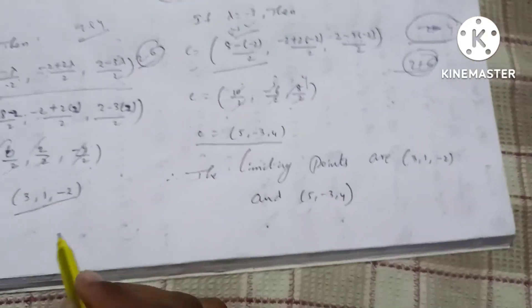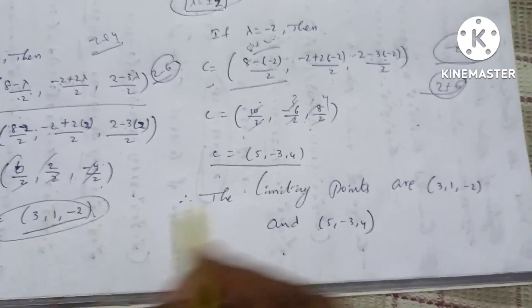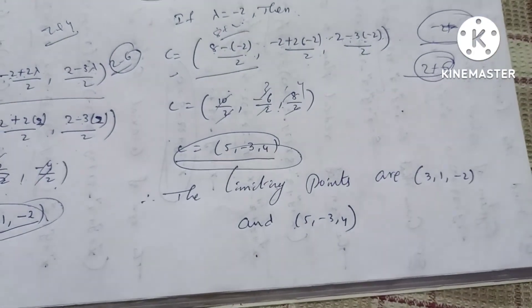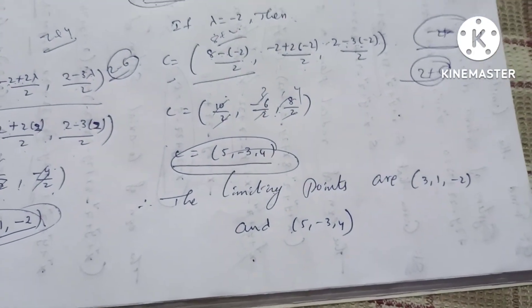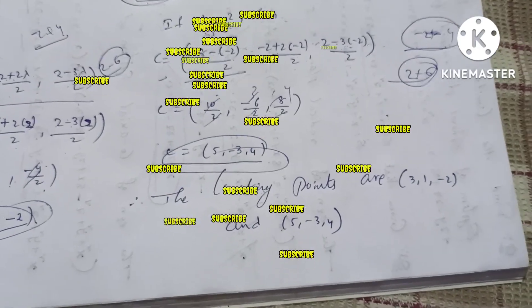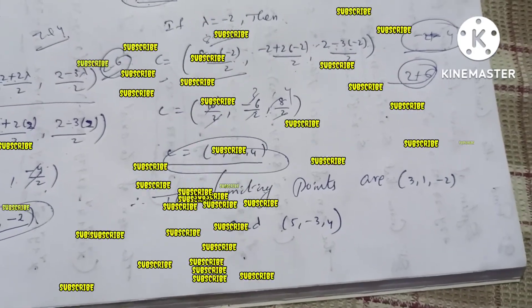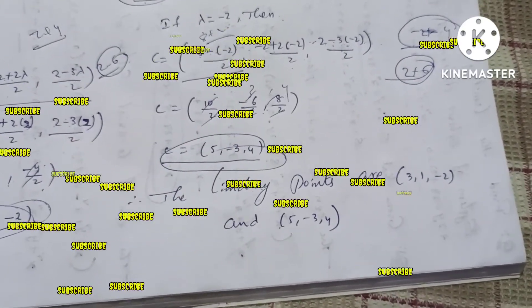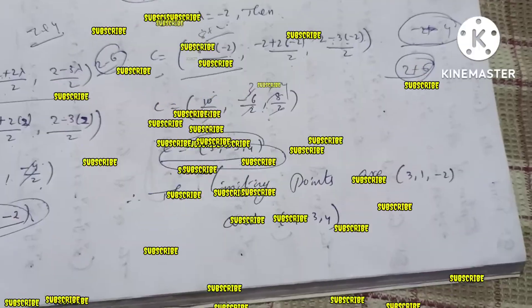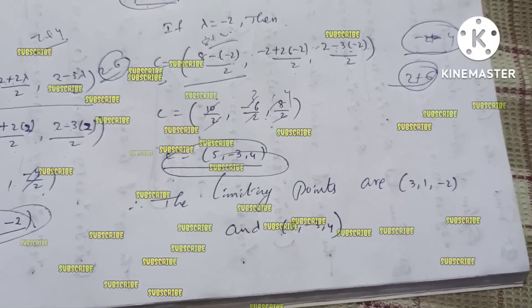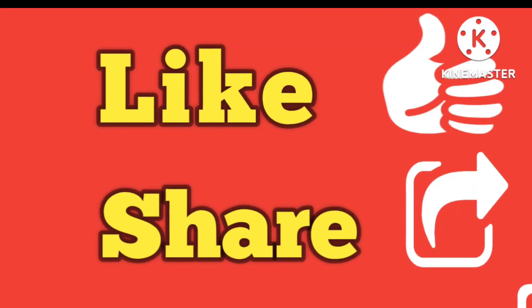Therefore the limiting points are the two points found. Please like and share this video, and if you have any doubts, mention them in the comment section. Subscribe to the channel for more support.